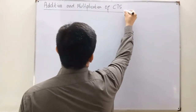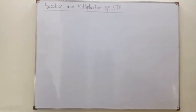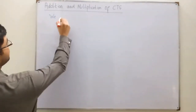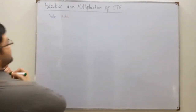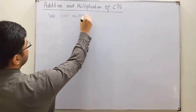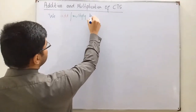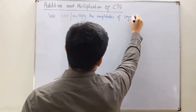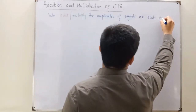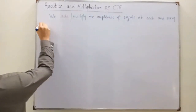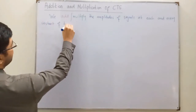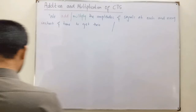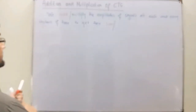So we see them both together. We add and/or multiply the amplitudes of signals at each and every instant of time to get their sum or product. I will use colors for this — addition with the red, product with the green.